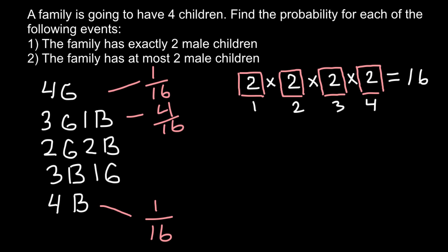Here's why three girls and one boy gives 4 out of 16. Imagine a family of four children with three girls and one boy — how many arrangements are possible? First: boy, girl, girl, girl. Second: girl, boy, girl, girl. Third: girl, girl, boy, girl. Fourth: girl, girl, girl, boy. So four arrangements out of 16.